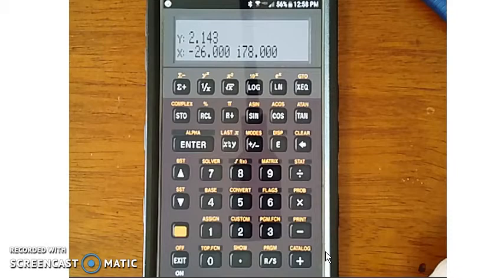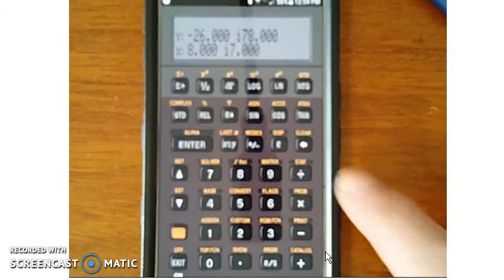Divide by 8 plus j7. 8, enter, 7, complex, divide. You can add, subtract, multiply, divide complex numbers with ease with HPs.